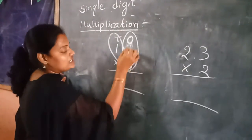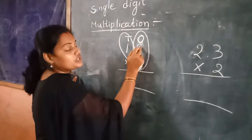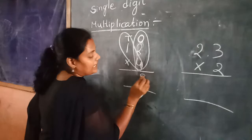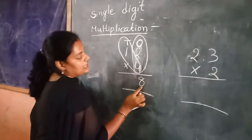First of all, multiply 4 with 1's place. 4 into how much? 2. 4 times 2 are 8. We have to write the right hand side. So, 4 times 2 are 8.